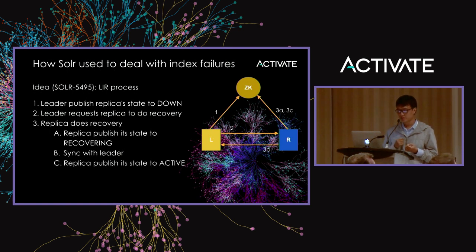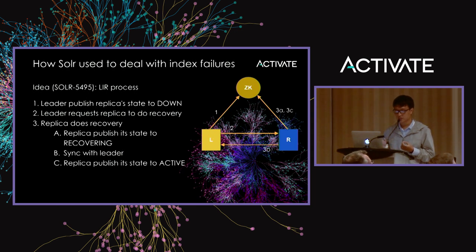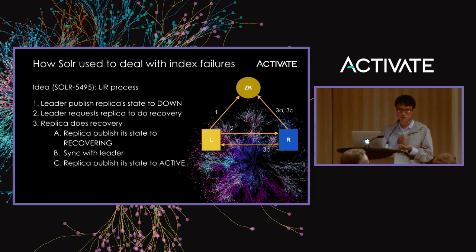The leader will repeatedly notify the replica: 'you are out of sync, you need to start recovery' by sending recovery requests to the replica. On receiving that request, the replica starts the recovery process. The first step is the replica publishes its state to Recovering. Then the leader may start forwarding updates to the recovering replica. The second step is the replica syncs with the leader, and after syncing successfully, the replica publishes state to Active so clients may query it.